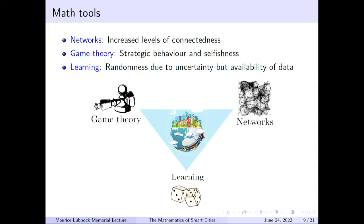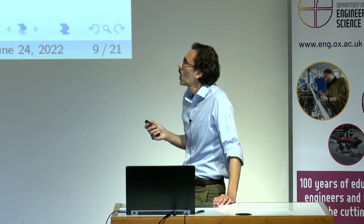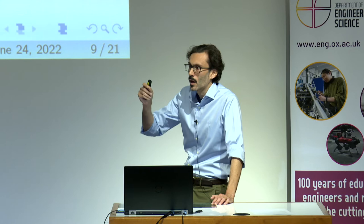The way to overcome those challenges is to resort to mathematical tools. I have listed three main pillars that have characterized my research in that area. The first has to do with networks — how we can exploit graph theory and network theory to exploit the degree of connectedness between different subsystems. The second has to do with game theory, to address the strategic intentions of the different entities within our city. The last has to do with learning, to account for the presence of randomness together with the simultaneous availability of data. In the next 15 minutes or so, I will explain how we can use tools from each of these fields in a specific application: electric vehicle scheduling, which sits at the interface between energy and transportation.